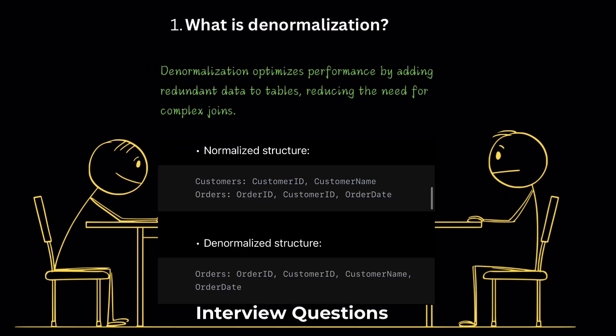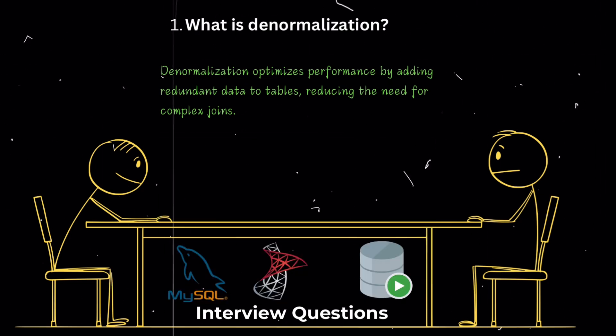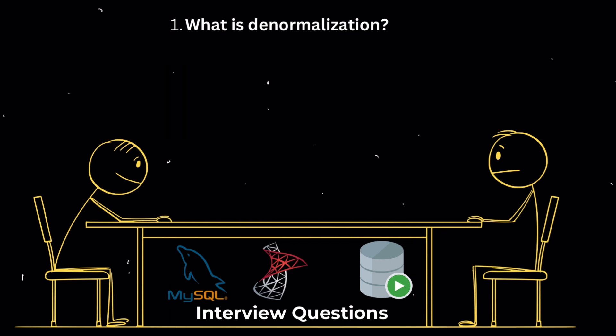What is denormalization? Denormalization is a technique used to optimize database performance by adding redundant data to tables. This can reduce the need for complex joins and improve query performance. It's important to note that denormalization is typically applied after normalization has been done.